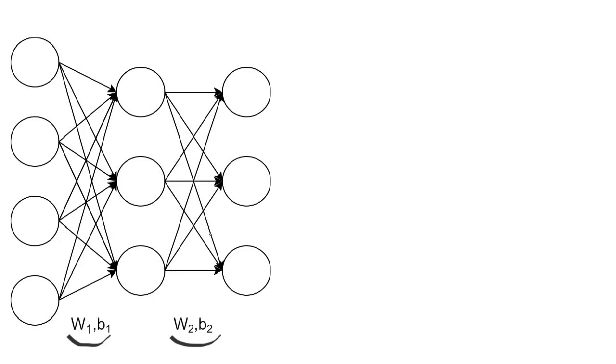What happens in such a network is that we have the input. It goes to the first layer to produce the activations a1 and then the a1 goes to the second layer to produce the activations a2.